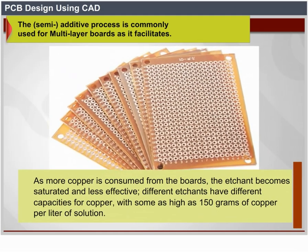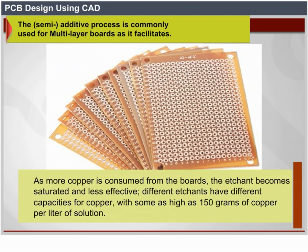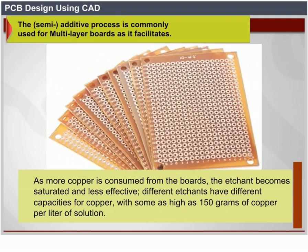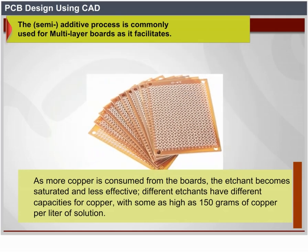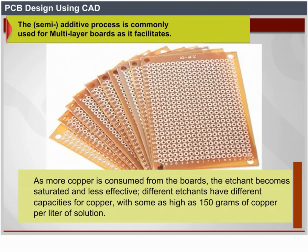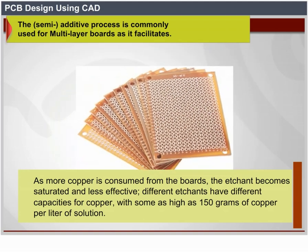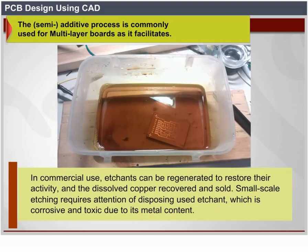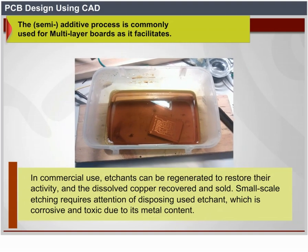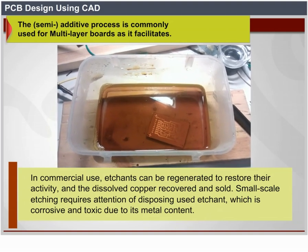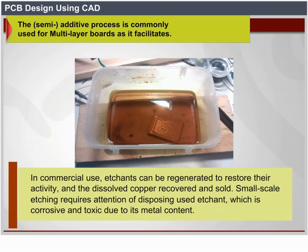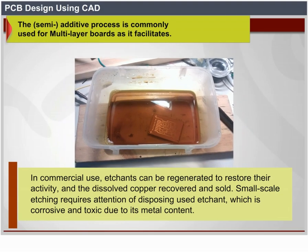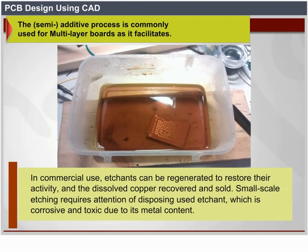As more copper is consumed from the boards, the etchant becomes saturated and less effective. Different etchants have different capacities for copper, with some as high as 150 grams of copper per liter of solution. In commercial use, etchants can be regenerated to restore activity and the dissolved copper recovered and sold. Small-scale etching requires attention to disposal of used etchant, which is corrosive and toxic due to its metal content.